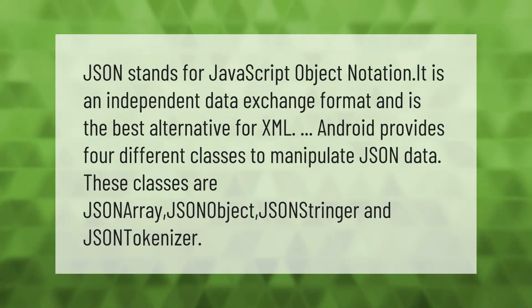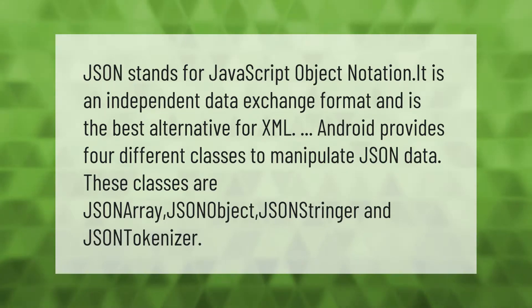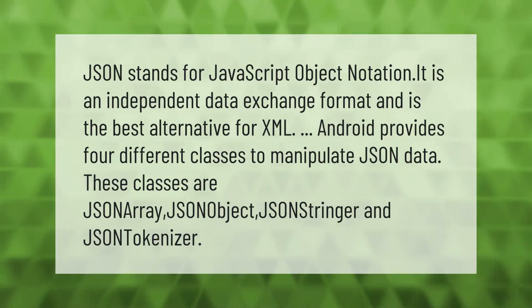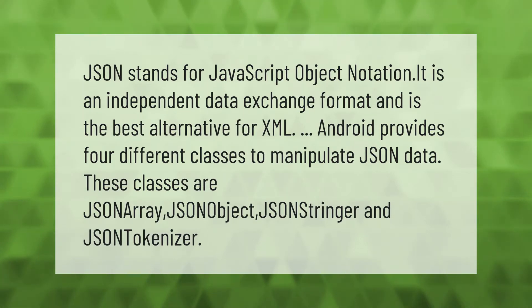JSON stands for JavaScript Object Notation. It is an independent data exchange format and is the best alternative for XML. Android provides four different classes to manipulate JSON data: JSONArray, JSONObject, JSONStringer, and JSONTokenizer. Thank you for watching — please subscribe and hit the bell notification.